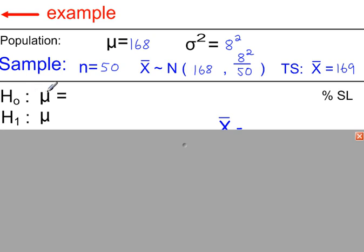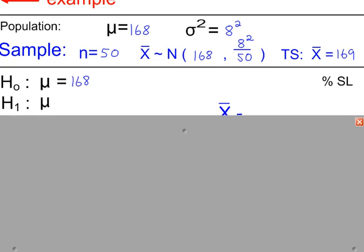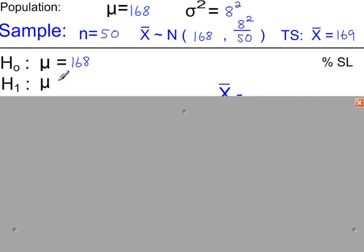So the null hypothesis, H0, is that the population mean is 168. We're looking for an increase, so we're testing to see if the students are now taller.